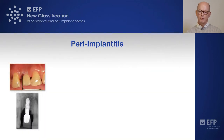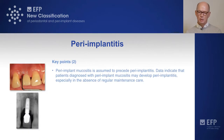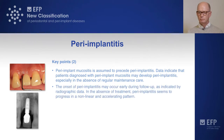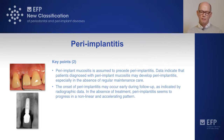Further characteristics of peri-implantitis include the knowledge that peri-implant mucositis precedes peri-implantitis. There are data indicating that patients diagnosed with peri-implant mucositis may develop peri-implantitis, especially in the absence of regular maintenance care. The onset of peri-implantitis may occur early at follow-up, as indicated by radiographic data. Also, in the absence of treatment, peri-implantitis seems to progress in a non-linear and accelerating pattern.